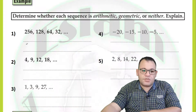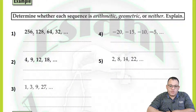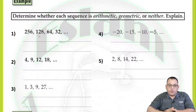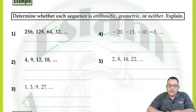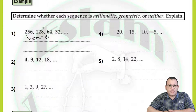For the first question, we need to determine whether the sequence is arithmetic or geometric. For number one, we have 256, 128, 64, and 32. You need to check if you add or multiply the same number each time. The number is decreasing, which means you subtract or divide. 256 minus 128 equals 128, so you subtract 128. Then 128 minus 64 equals 64, so you subtract 64. The difference is not the same, so it's not arithmetic.